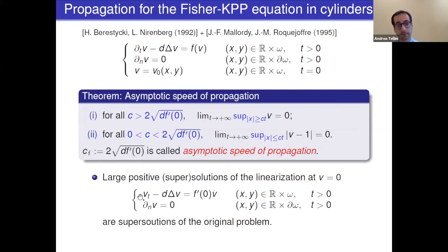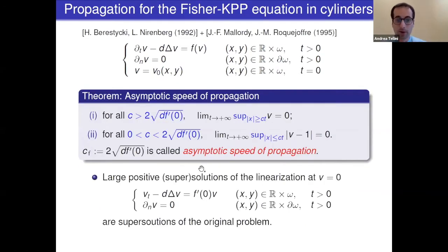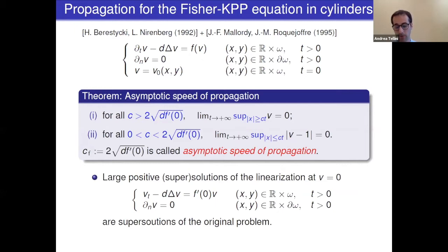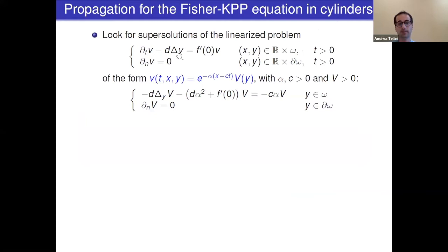This critical quantity, which separates the two behaviors, is called the asymptotic speed of propagation, denoted c_f. The linearized problem at v=0 — replacing the nonlinearity with F'(0)·v — plays an important role because the Fisher-KPP assumption implies that solutions of this linear problem are super-solutions of the nonlinear problem. If we can construct super-solutions moving at a certain speed, this gives an upper bound for the speed of propagation. Super-solutions moving with a certain speed give an upper bound for the speed of propagation.